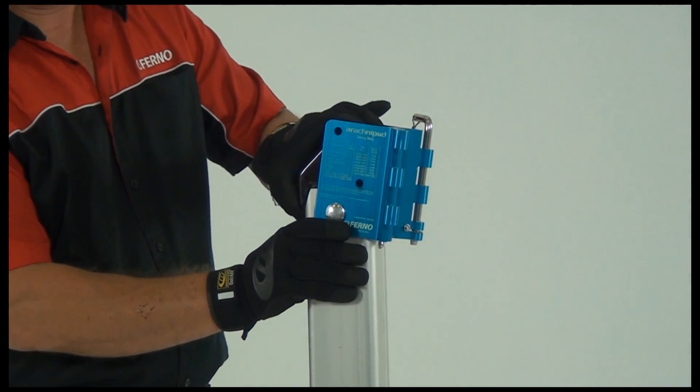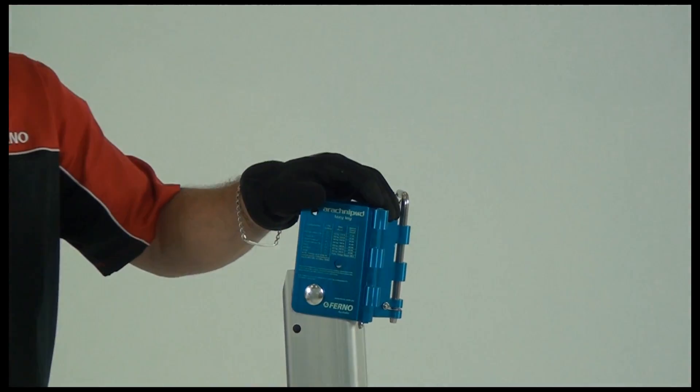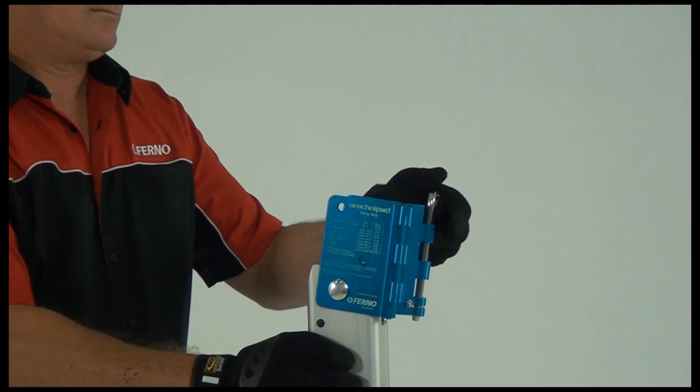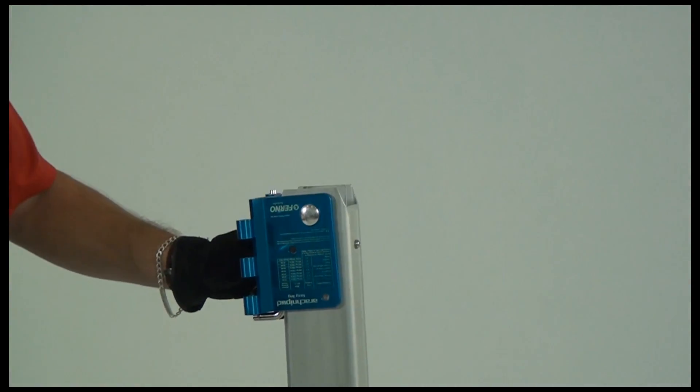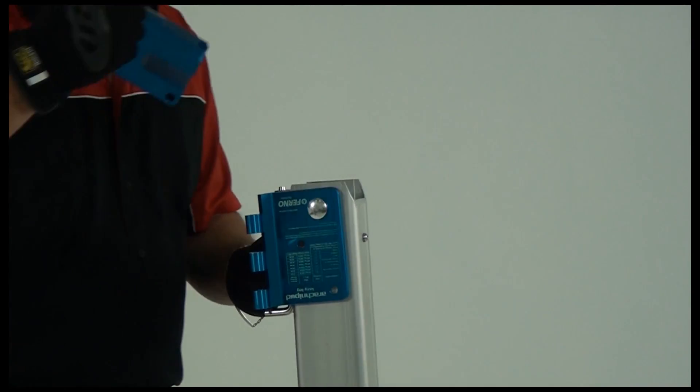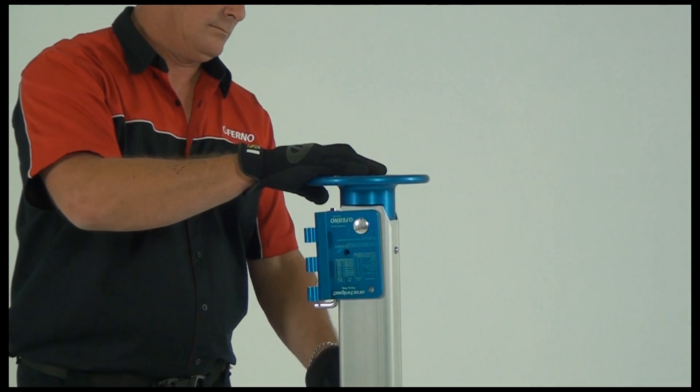To connect the gin head first remove the lazy leg adapter if in use. Rotate the lazy leg head 180 degrees to expose the leg tube, then insert the gin head onto the leg ensuring that the pin holes on both components are lined up.